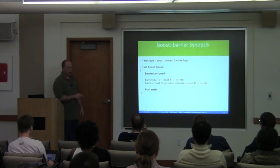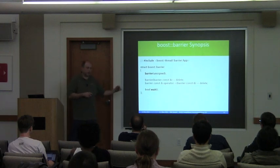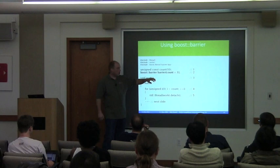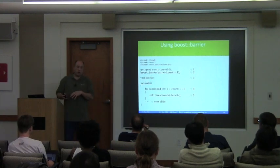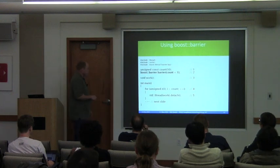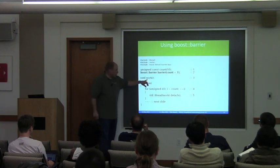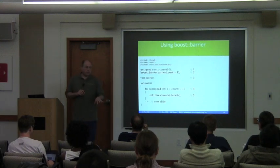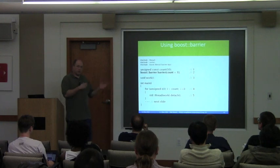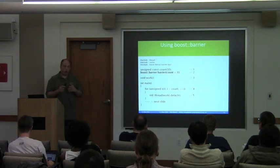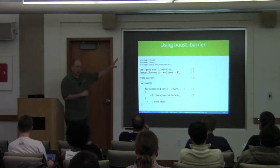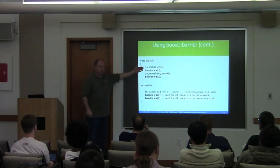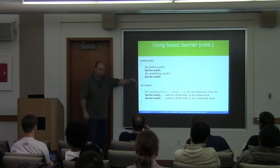Boost::barrier is pretty simple: constructor with the number of threads you want to wait on, and a wait function. It's not copyable or movable. To use it: I create 30 threads and a barrier for 31, because I want the creator thread to also block. I create 30 std::thread objects running work and immediately detach. All I've done is launched 30 threads. I can do initialization work, wait on the barrier, do more work, wait on the barrier again — you can reuse it as many times as you want.